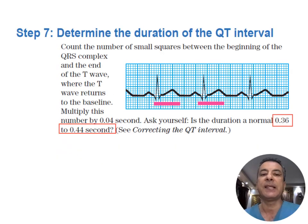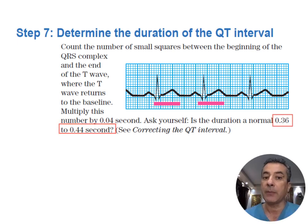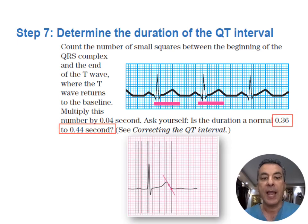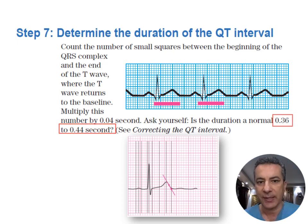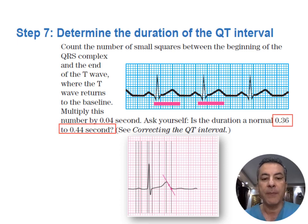The seventh step examines the QT interval, a crucial indicator for ventricular depolarization and repolarization duration. This interval commences from the start of the QRS complex and extends until the end of the T wave, determined using the tangential line method. Given the variations of the QT interval with heart rate, correction is imperative before interpretation. Several formulas are employed for this correction, with the Bazett formula being the most well known; for extremes in heart rate, the Hodge formula is the most accurate. A corrected QT interval less than 440 milliseconds and more than 360 milliseconds is considered normal.